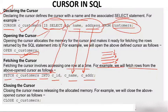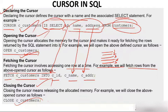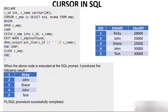Finally, you close the cursor. The moment you close the cursor, you release the memory. You simply write: CLOSE c_customer. So you have closed the cursor and released the allocated memory.